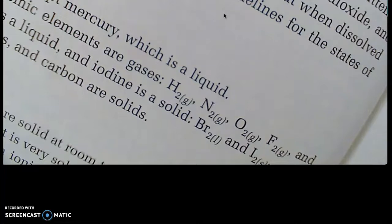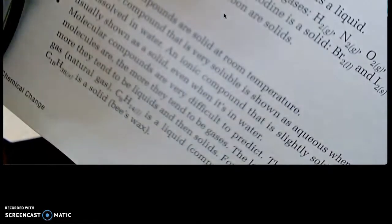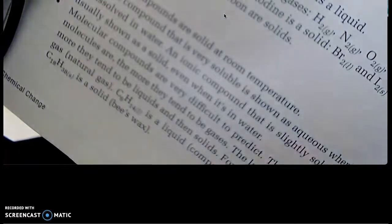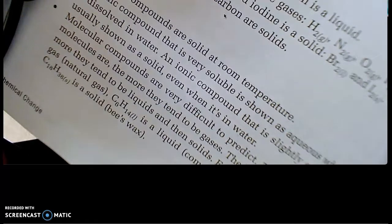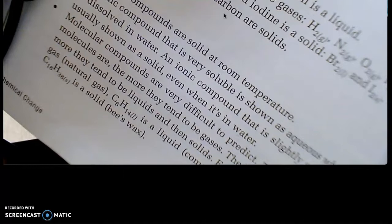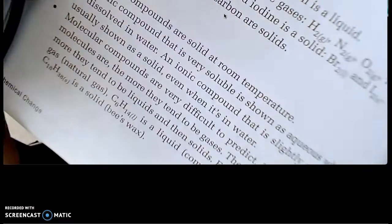Some of our compounds that we talked about are ionic and molecular compounds, and they have different properties. Ionic are solid at room temperature; if it's very soluble, it's aqueous when dissolved in water. Molecular compounds are hard to predict; they're more likely to be gases if they are smaller.